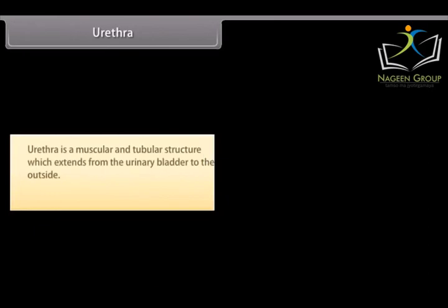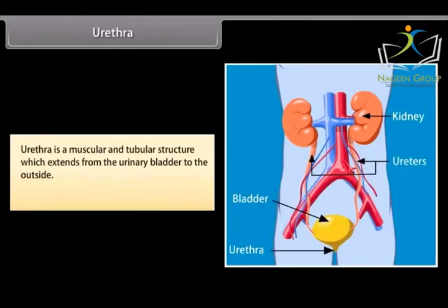Urethra is a muscular and tubular structure which extends from the urinary bladder to the outside. The urethra carries urine to outside the body.